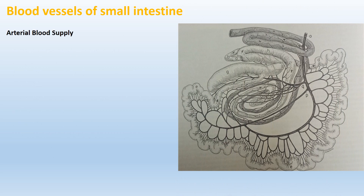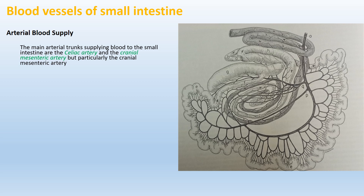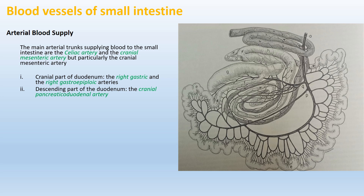I will now discuss the blood vessels of the small intestine, beginning with arterial blood supply then venous drainage. The main arterial trunks supplying the small intestine are the celiac artery and the cranial mesenteric artery, both direct branches of the abdominal aorta, with the cranial mesenteric artery being of particular importance. The cranial part of the duodenum receives blood from the right gastric artery and the right gastroepiploic artery. The descending duodenum receives blood from the cranial pancreaticoduodenal artery, while the ascending duodenum receives blood from an artery originating from the left side of the cranial mesenteric artery or from the middle colic artery.